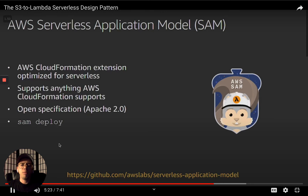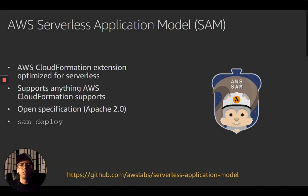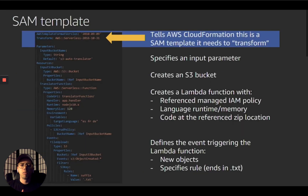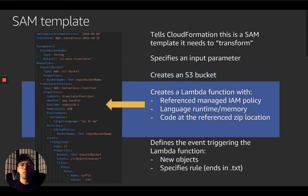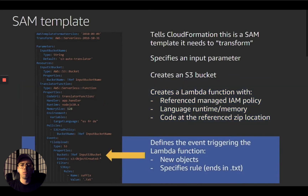You can do all of this in the console, but it's much easier to automate through code. SAM is a CloudFormation extension designed to make serverless application deployment easier. You simply type SAM deploy on your command line. Here is a simple SAM template — it tells CloudFormation it's a SAM template that needs to transform. It specifies an input parameter — in this case a bucket name — and in the resources section creates an S3 bucket and a Lambda function with the correct IAM policy, specifying the language runtime, memory, and code location. It also specifies the event triggering the Lambda function.